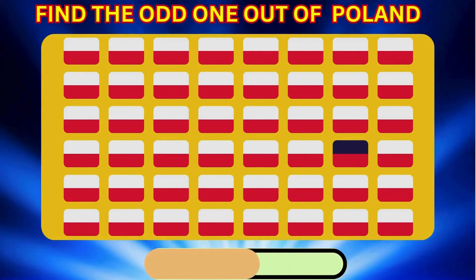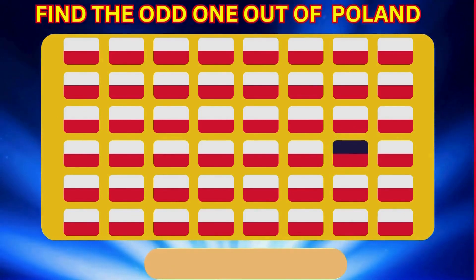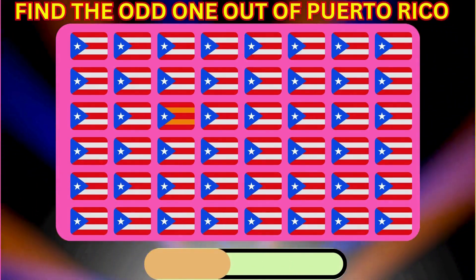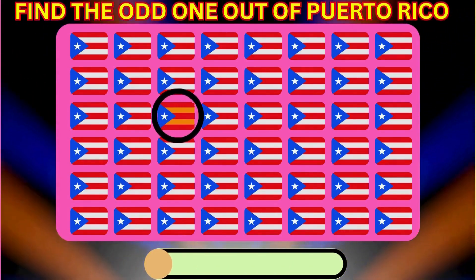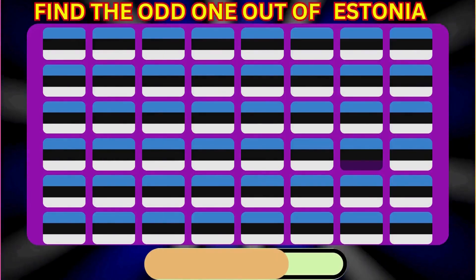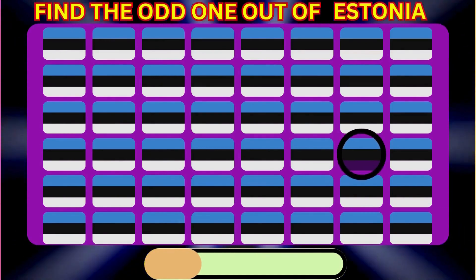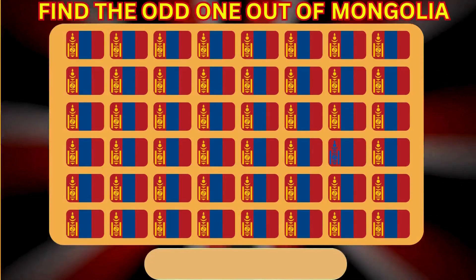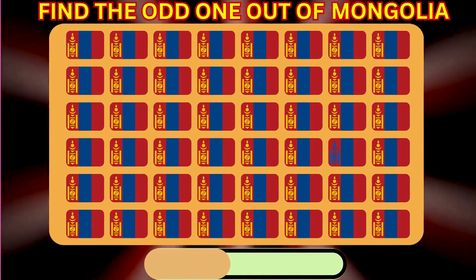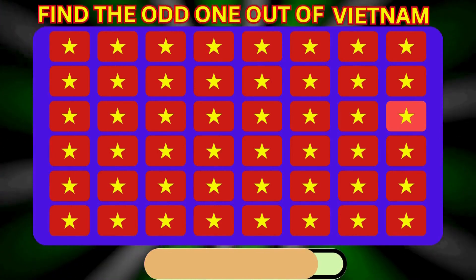Find the Odd One Out of Poland. Find the Odd One Out of Puerto Rico. Find the Odd One Out of Estonia. Find the Odd One Out of Mongolia. Find the Odd One Out of Vietnam.